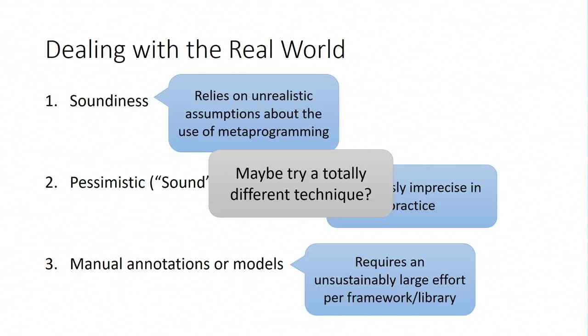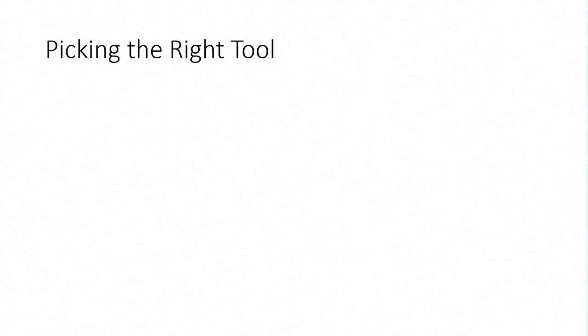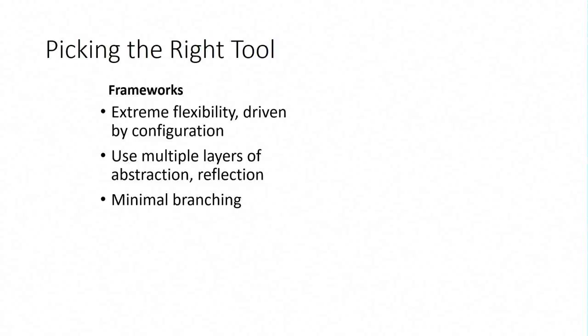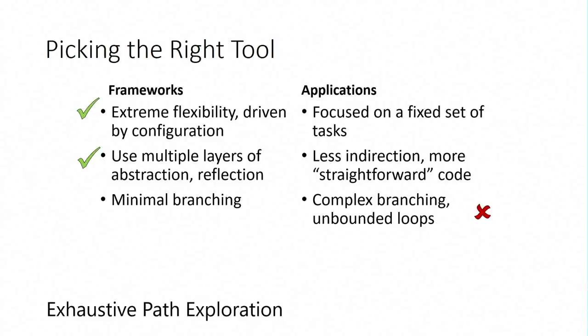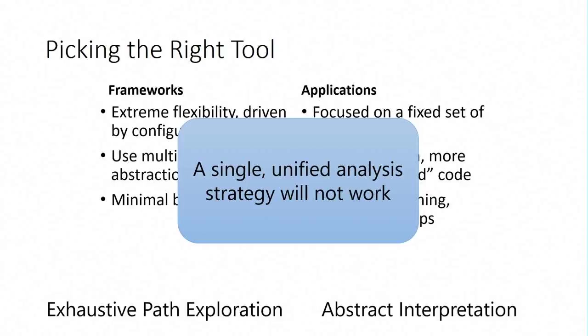So what we'd like to do is maybe try a totally different technique that would let us statically analyze framework-based applications. So here's the way we think we can leverage a way to do this. We look at the frameworks and we say, well, there's two really hard things: the extreme flexibility and configuration files, and the huge levels of abstraction and reflection. But on the plus side, there isn't a lot of branching in the framework code. That's not where the core control flow decisions are. So you can actually probably do exhaustive concrete path exploration over that code. The problem is the application. The application has your unbounded loops, your complex branching, interesting data structures that exhaustive path exploration is probably not going to get very far. On the other hand, you have abstract interpretation, which has the reverse issue. It does really well with summarizing loops and things like that, but it struggles with these.